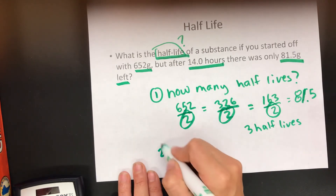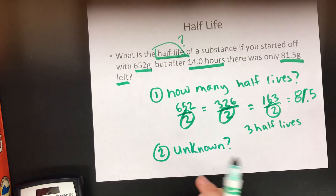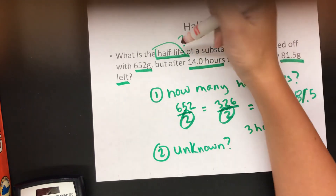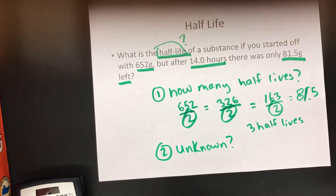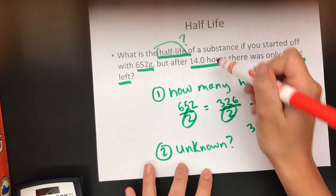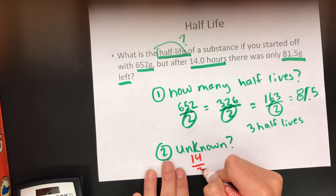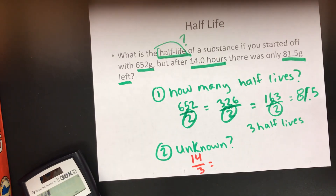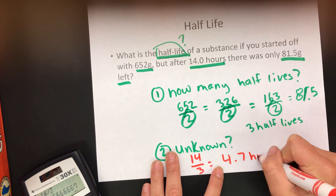Step two: find the unknown — in this case, what is the half-life of the substance? It divided in half three times over 14 hours. To find the time of one half-life, just take the total time and divide it by the number of half-lives. So take 14 and divide by 3, because there are three half-lives. 14 divided by 3 is approximately 4.7 hours — that's your half-life.